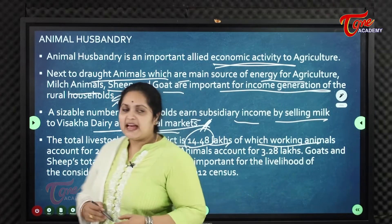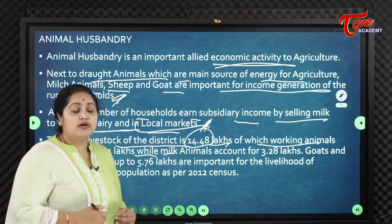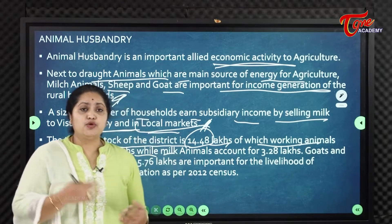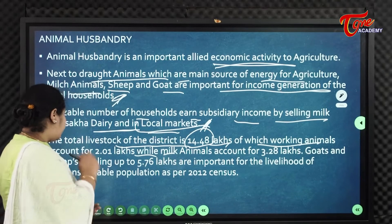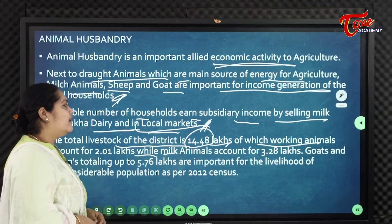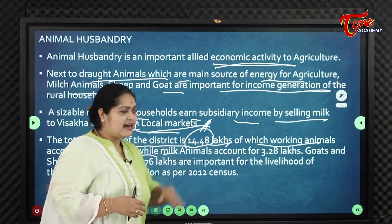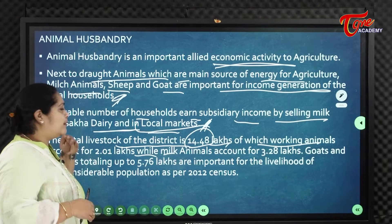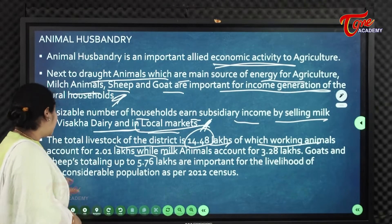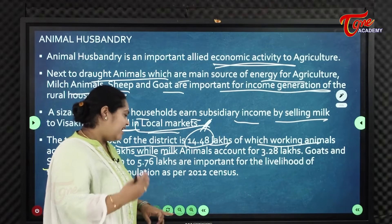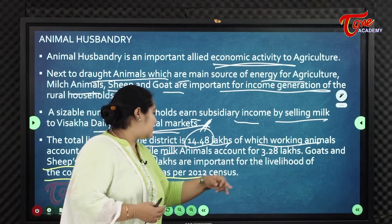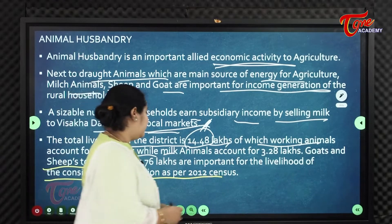Milk animals account for nearly 3 lakhs, and goats and sheep total up to 5 lakhs, which are important for the livelihood of a considerable population as per the 2012 census.